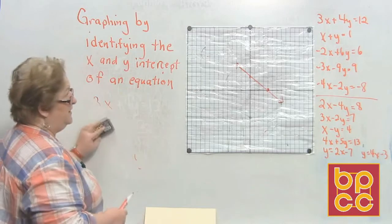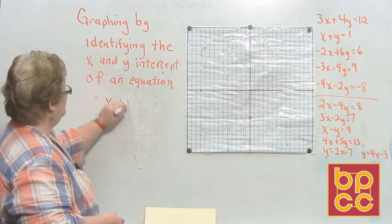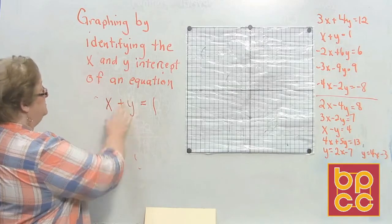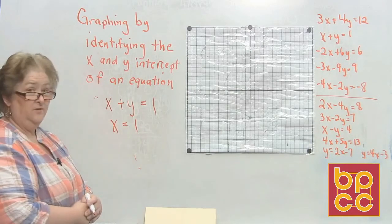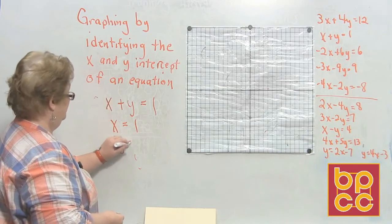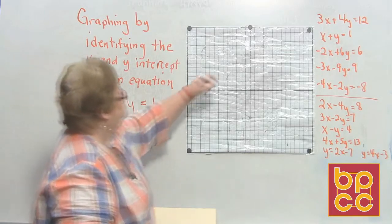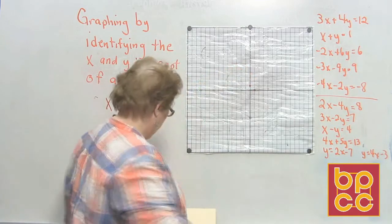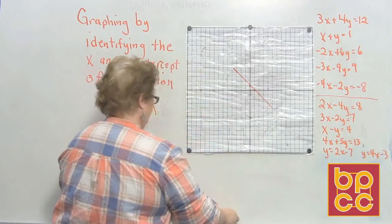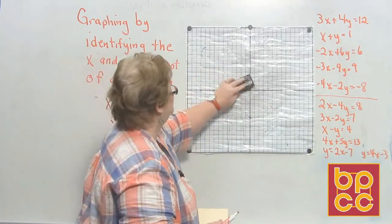Let's try another: x plus y equals 1. To find the x-intercept, cover the y — x equals 1. To find the y-intercept, cover the x — y equals 1. So I place a point at x equals 1 on the x-axis and a point at y equals 1 on the y-axis. Graphing on the x and y-intercepts gives a line going downhill. We don't have to think about slope — we're just plotting the intercepts.